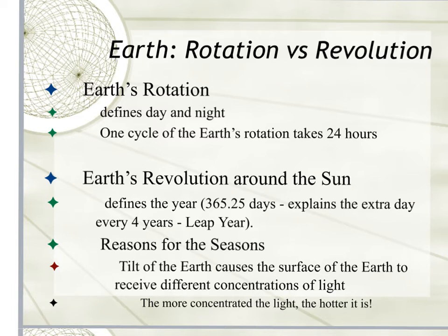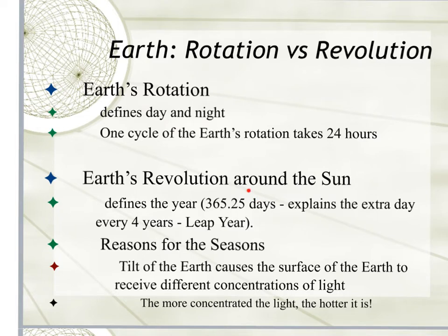Orbit basically means the time it takes to complete a rotation around the sun. When talking about Earth, we also have the terms rotation and revolution, and they're two different things. Earth's rotation defines night and day — it takes 24 hours for Earth to rotate around its axis. Revolution, on the other hand, is the time it takes for the Earth to orbit around the sun. It takes 365.25 days to revolve around the sun, and this extra 0.25 days ends up in our leap year every four years.